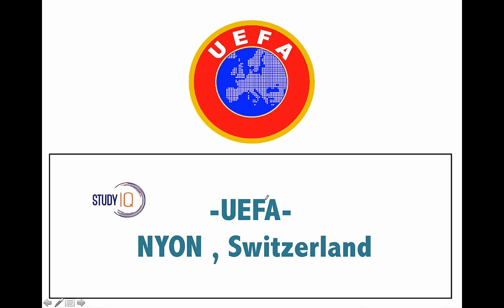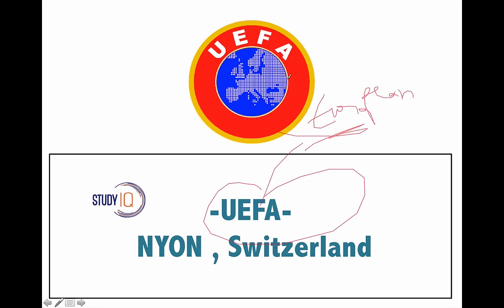Next is UEFA — the football governing body in Europe. All football tournaments in Europe are conducted by UEFA, such as the UEFA Euro and the UEFA Champions League. Its headquarter is in Nyon, Switzerland.